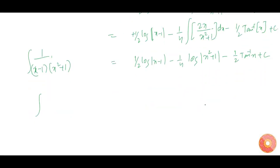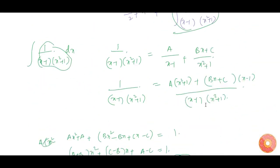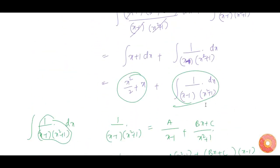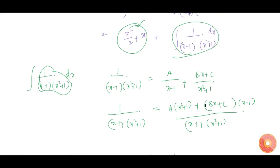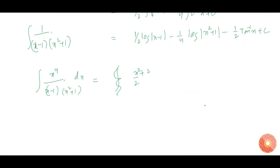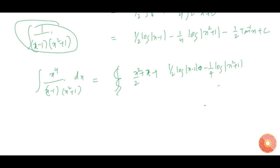Now let us write the full answer for the integration of x to the power of 4 divided by (x minus 1) into (x squared plus 1) dx. We already know the first part is x squared by 2 plus x, and the second part is 1 by 2 log mod(x minus 1) minus 1 by 4 log mod(x squared plus 1) minus 1 by 2 tan inverse x plus c. This is our final answer.